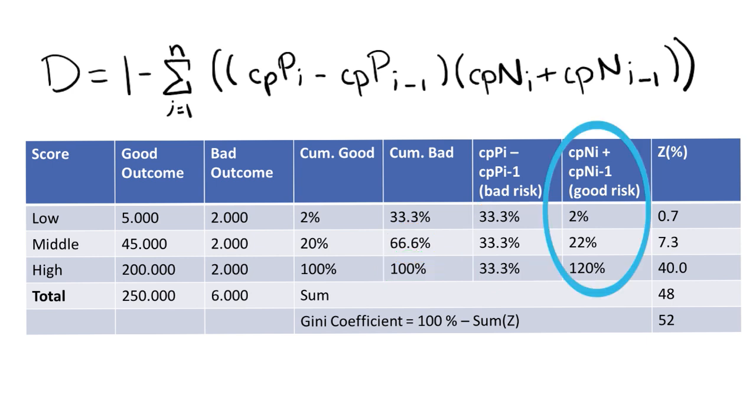We also calculate the cumulative good value of each row plus the cumulative good value of the previous row. So in the first row, we have 2%, and in the second row, we have 20 plus 2, which is 22%. And in the third row, we have 100 plus 20, which is 120%. Then we multiply these two columns together to find the Z value, and we will then sum up all the Z values, which in this case results in 48%.